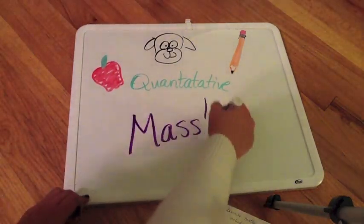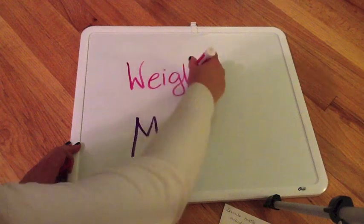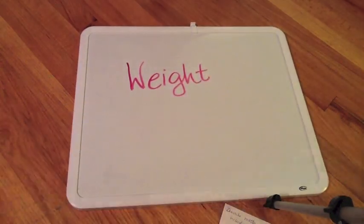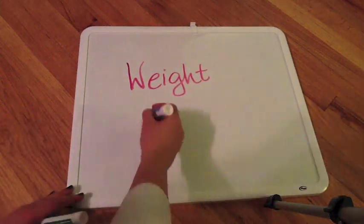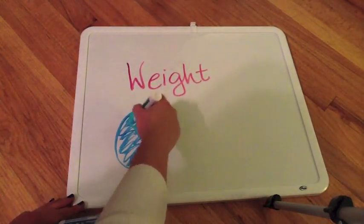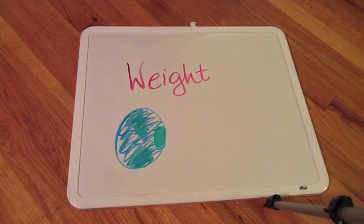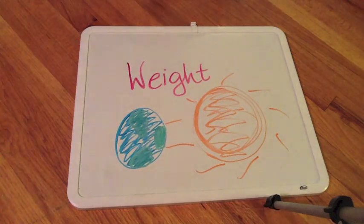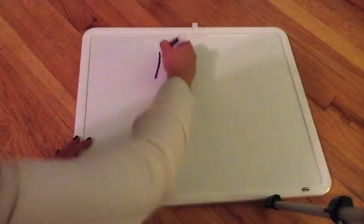Now one specific quantitative property of matter we have to talk about is mass, but first we have to think about what's the difference between weight and mass. Well, weight has to do with gravity. So here we have the Earth and then we have the Sun. Now because Earth has a smaller mass than the Sun, gravity is less here, so we would weigh a lot more on the Sun than we do on the Earth.